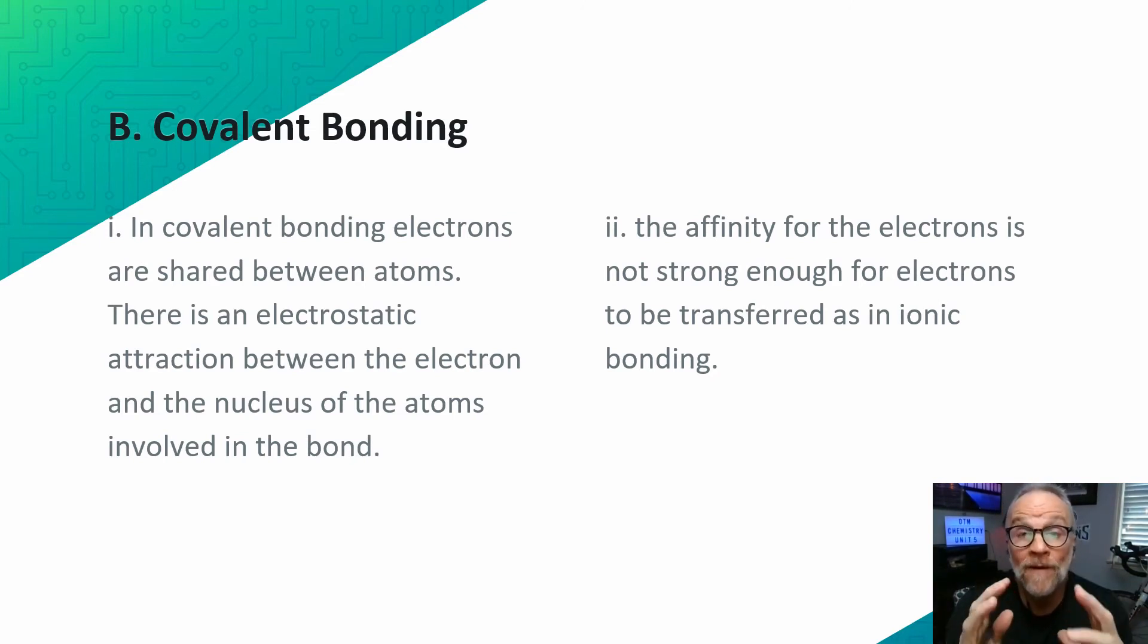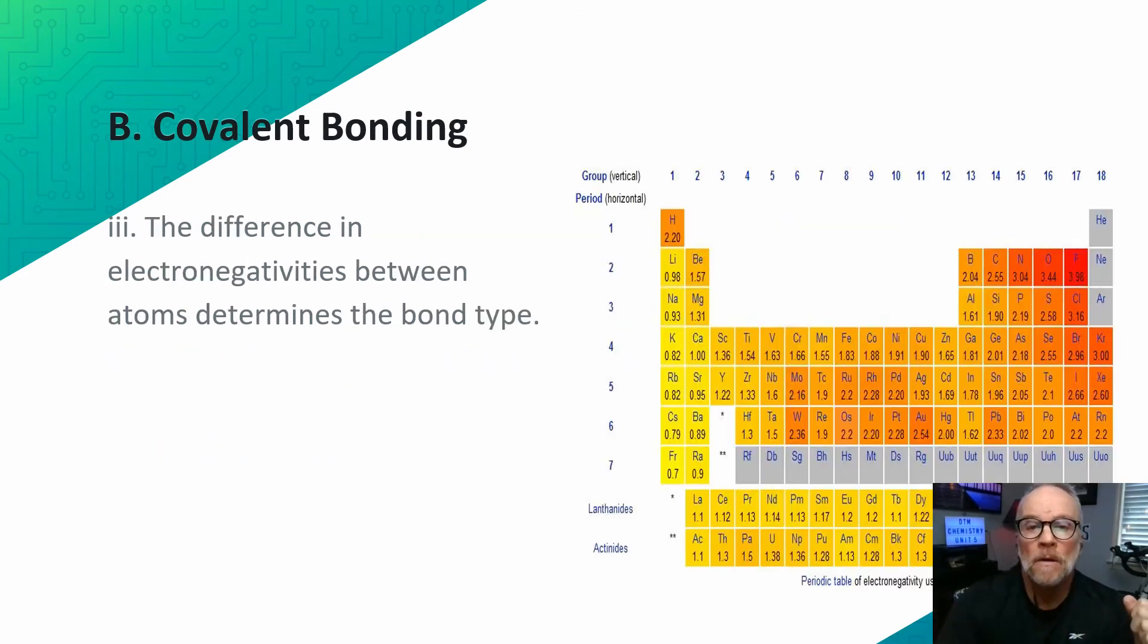Within covalent bonds, just because the electrons are shared doesn't mean they're equally shared. Sometimes one atom holds on to the electron for a longer period than the other. They create what we call partial positive and partial negative charges. The difference in electronegativity between atoms determines the bond type.